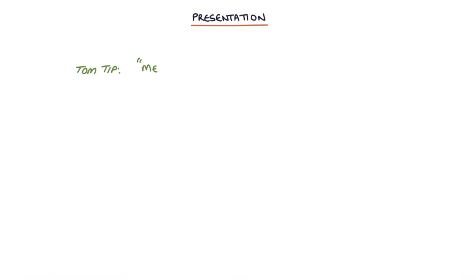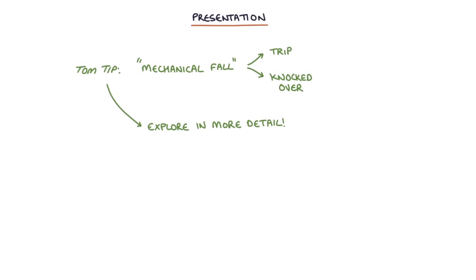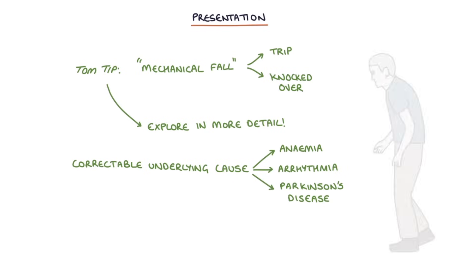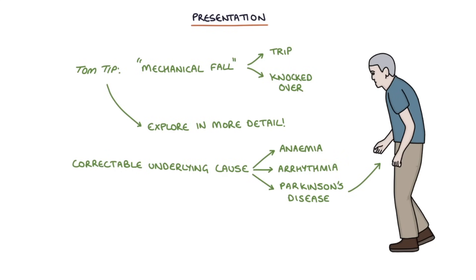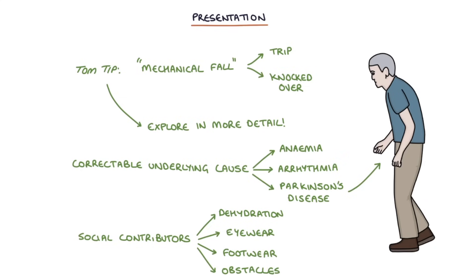The term 'mechanical fall' is often used to imply a simple explanation for why the patient fell, such as tripping over an object. It's worth exploring the fall in more detail, as there may be a correctable underlying medical cause, such as anaemia, arrhythmia, or even underlying Parkinson's disease. There may also be social contributors to the fall, such as dehydration, incorrect eyewear, poor footwear, or obstacles in the home. Identifying an underlying reversible cause could make a big difference to the patient.